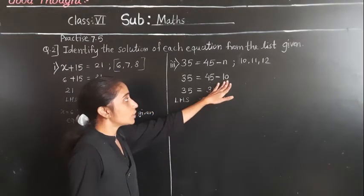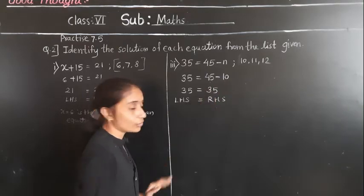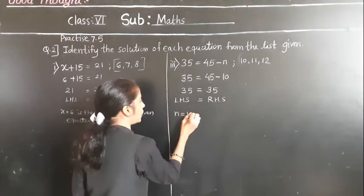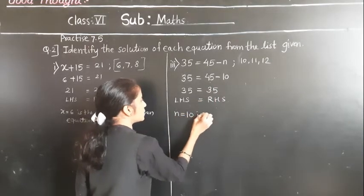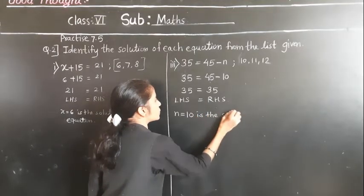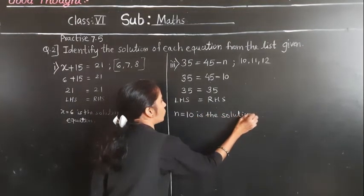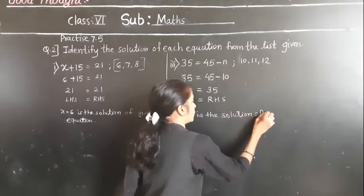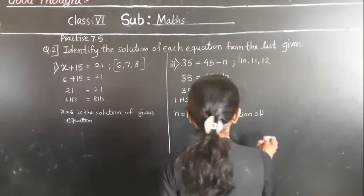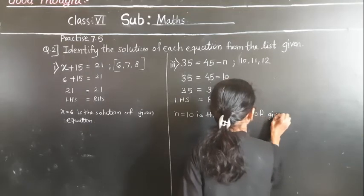With 10 we got both sides equal. So N is equal to 10 is the solution of the given equation.